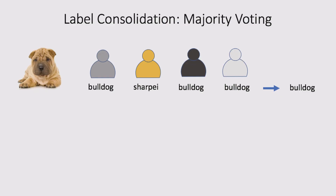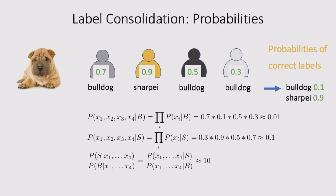In the event of disagreement — say you've got four people looking at a picture of a dog, and three say it's a bulldog but one says it's a Sharpei — basic analysis says three out of four, it's probably a bulldog. But in reality, you should look at the probabilities: chain the probabilities that each person has been correct in the past, and that's a better way to annotate those results. All that annotation consolidation is available on Amazon SageMaker Ground Truth — using this ability to model how accurate a person has been to more correctly incorporate their specific labels.